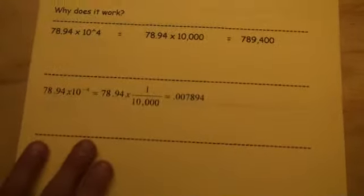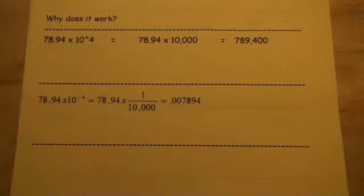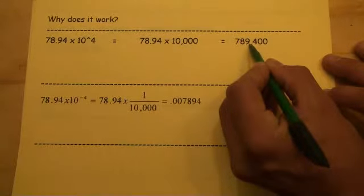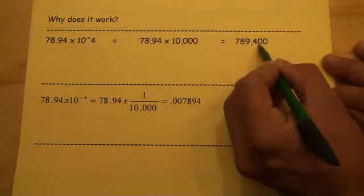So why does it work? The reason it works is because if you took 78.94 for example and multiplied by 10 to the fourth, that's the same thing as 78.94 times 10,000, which of course moves the decimal over four places.